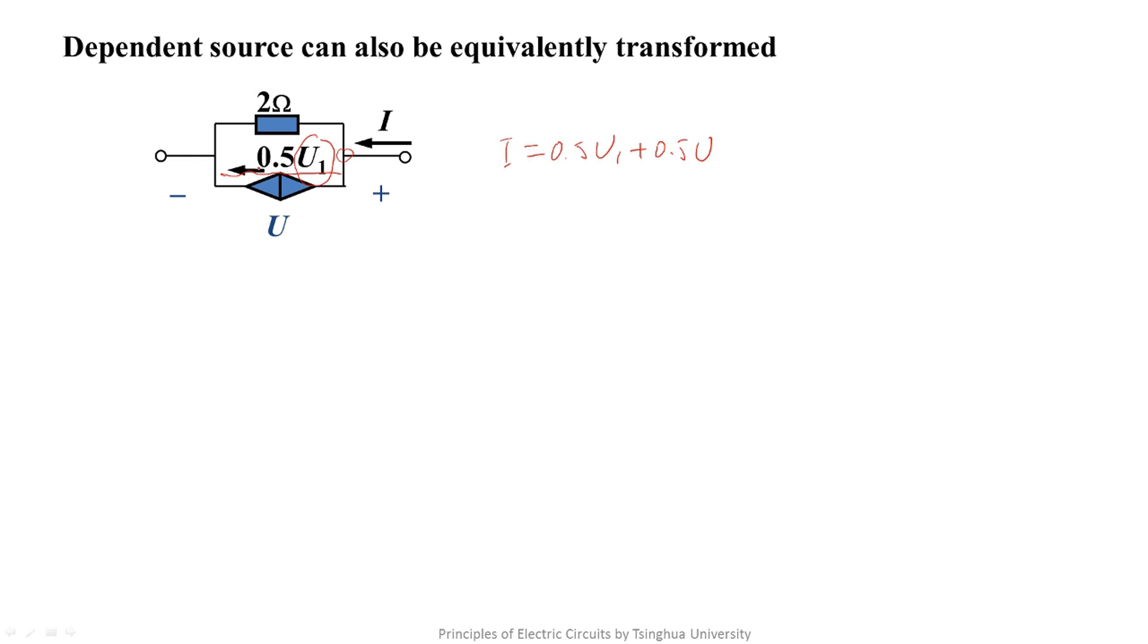So, if you take it as an independent current source, what corresponding equivalent sub-circuit of the voltage source will it be? It must be 2 Ohm.